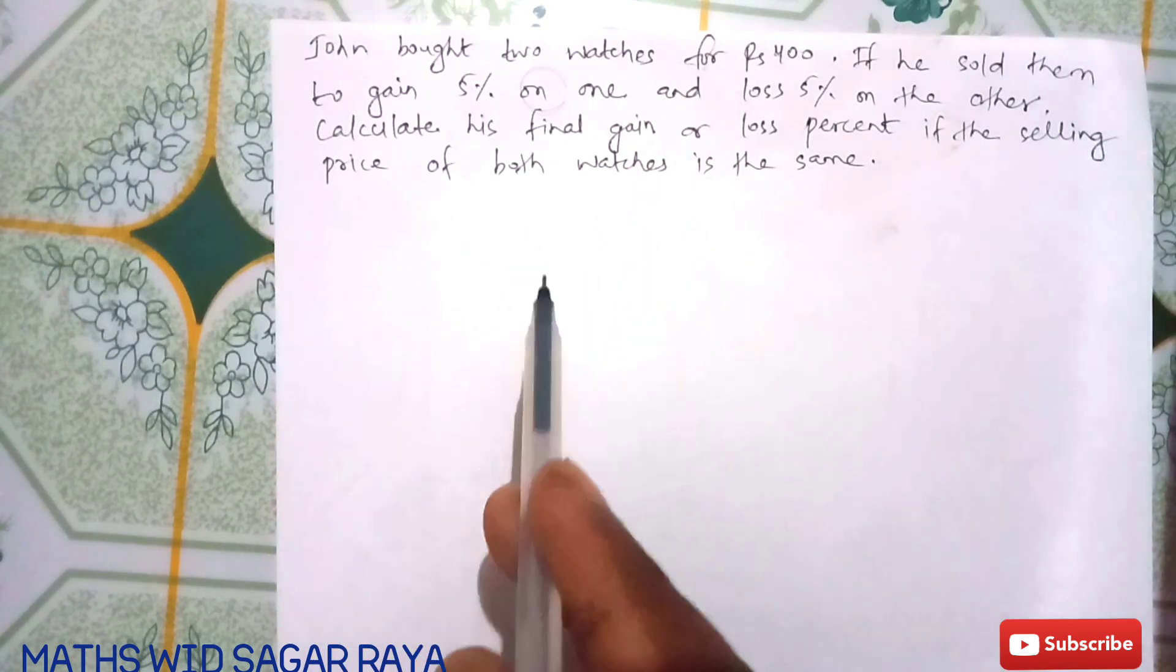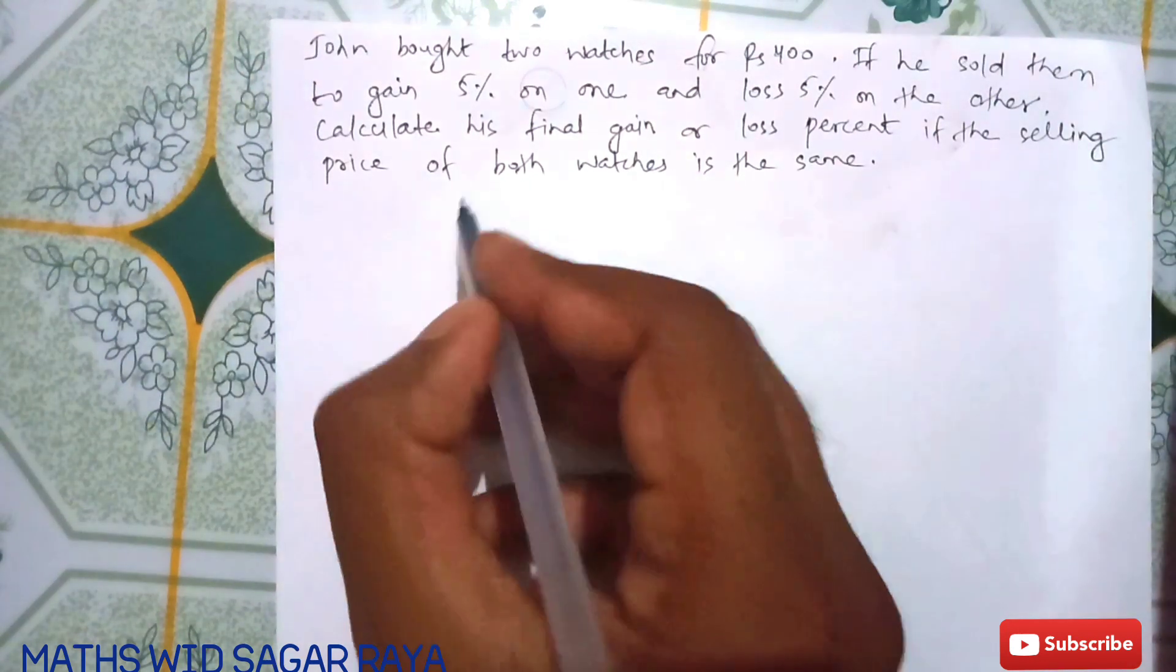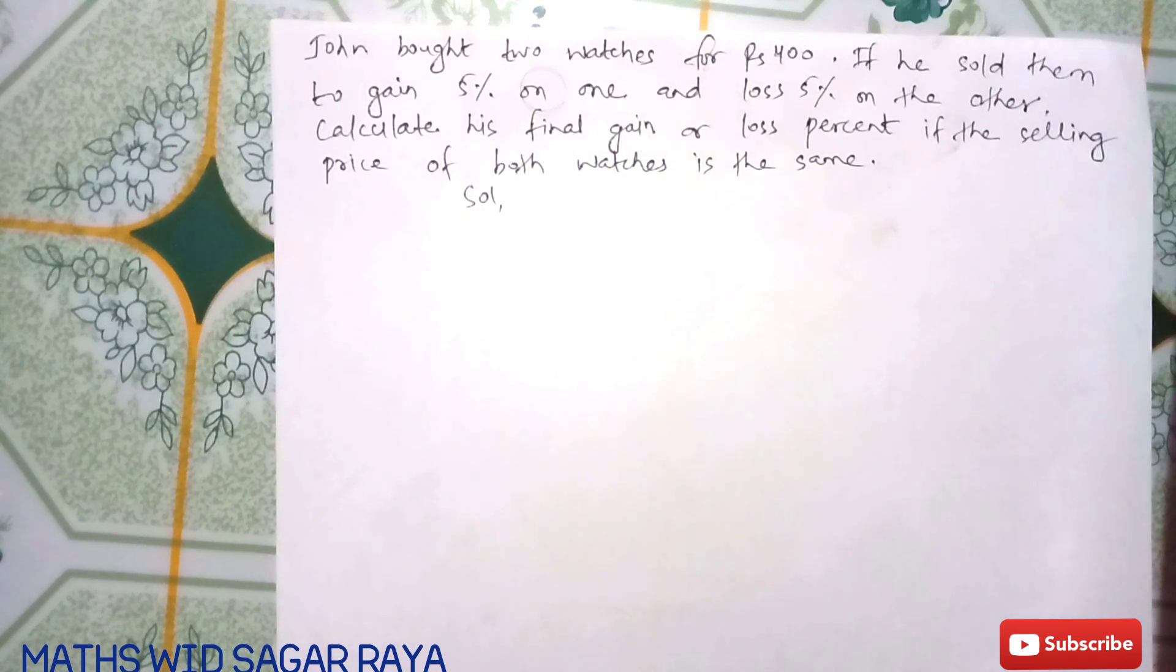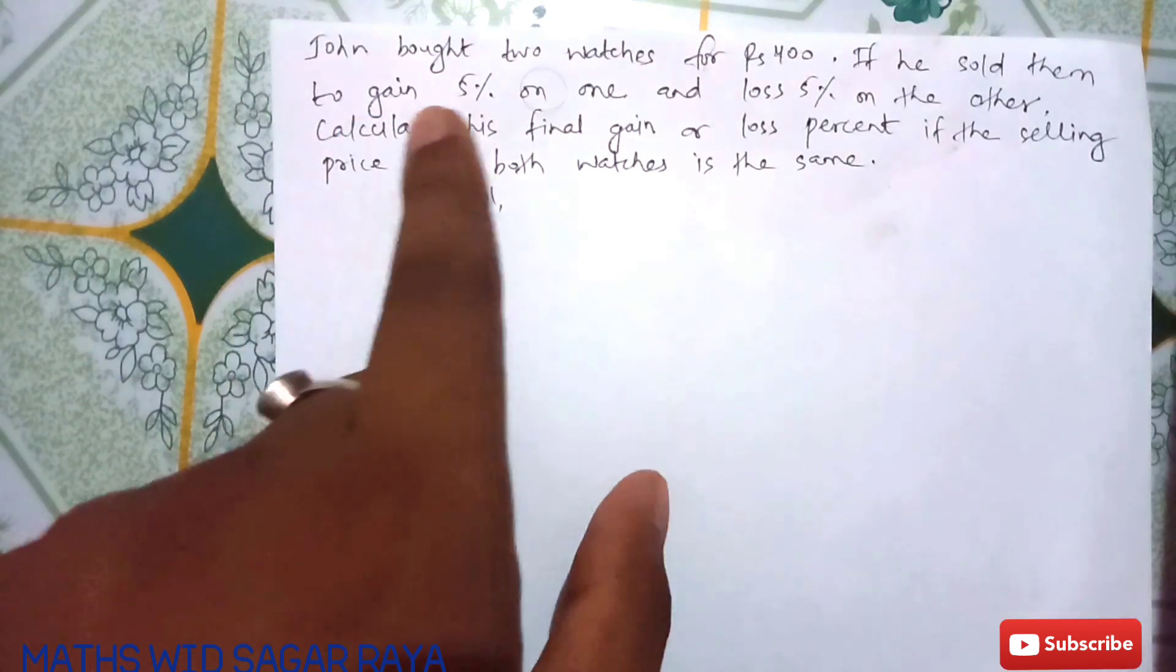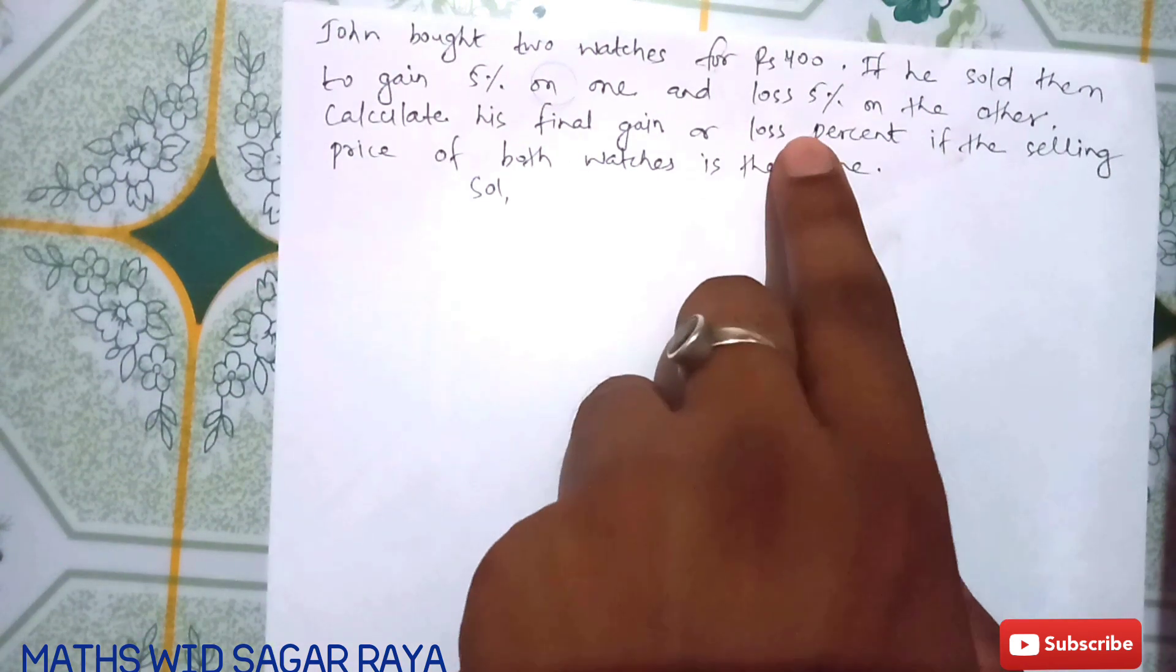The selling price of both watches is the same. So here you can see there are two cases. John bought two watches for rupees 400. In one case he sold to gain 5% on one watch, earning 5% profit. In the other case, he lost 5%.